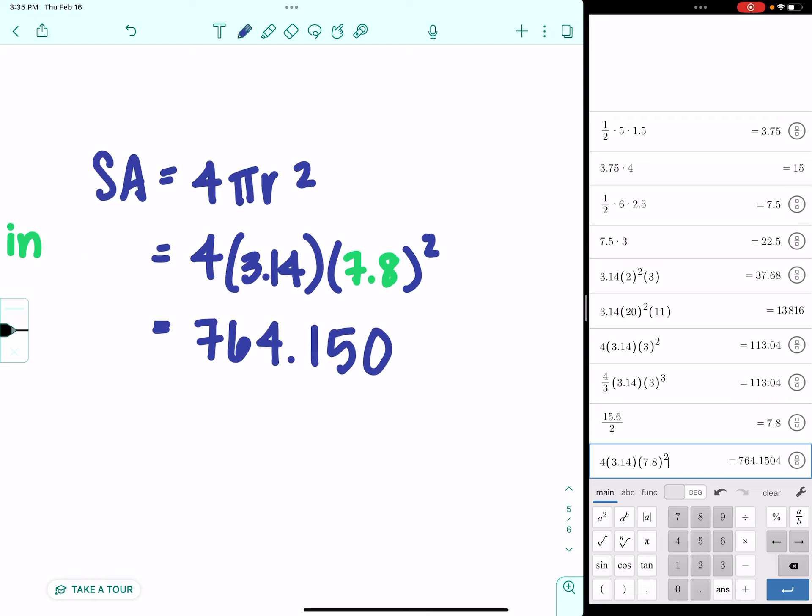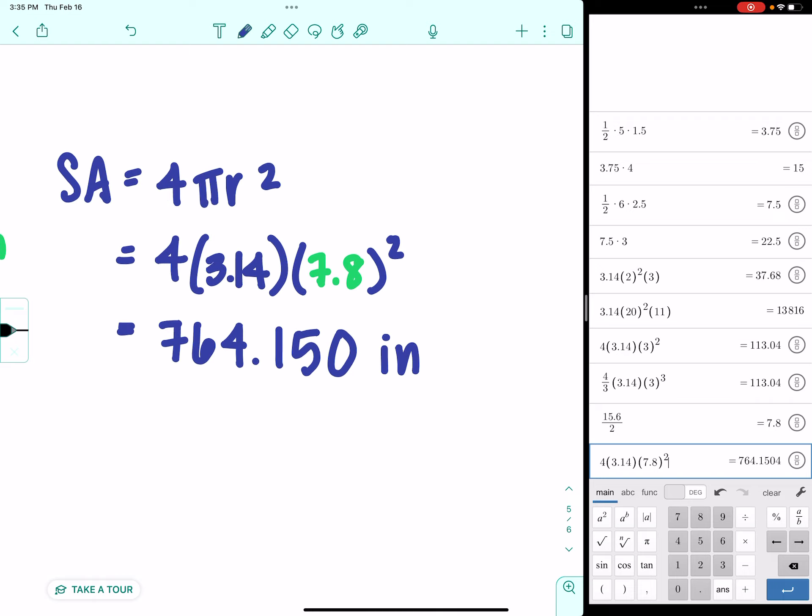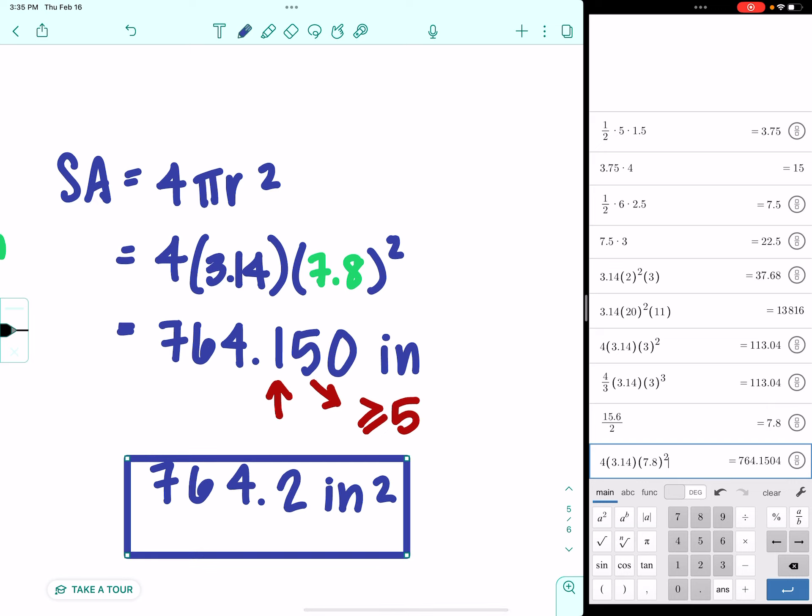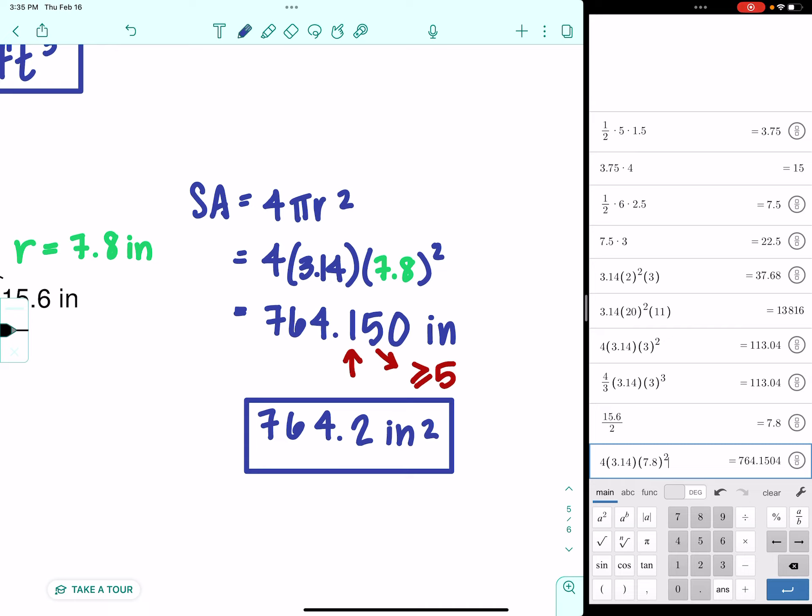And we're measuring in inches. We need to round to the nearest tenth. That's the one. So, we look at one place beyond that. We're going to look at the five. Five is greater than or equal to five. So, we're going to bump the one up to a two. We're dealing with surface area. And area is squared. So, the surface area of this particular sphere is 764.2 square inches, approximately, because we did round.